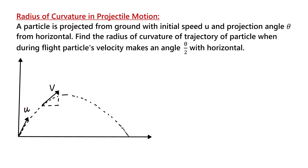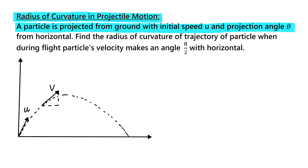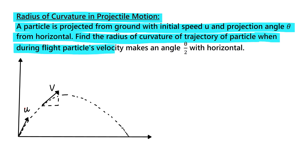Hello friends. In this video I will illustrate how you can find radius of curvature in projectile motion. This problem says a particle is projected from ground with initial speed u and projection angle theta from horizontal. We have to find the radius of curvature of the trajectory when during flight the velocity makes an angle theta by 2 with the horizontal.